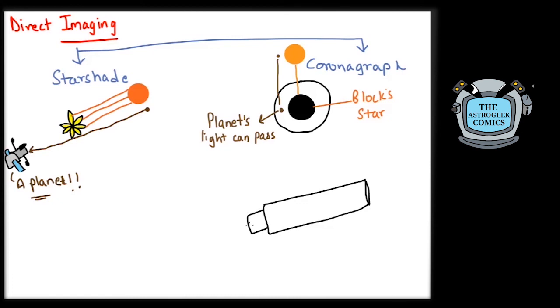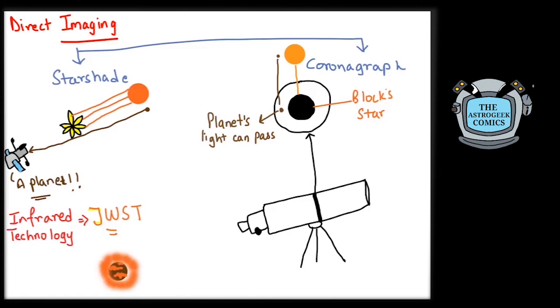Unlike a starshade, a coronagraph can be incorporated inside the telescope's body itself. More sensitive infrared observatories can make direct imaging a more practical method of observation. Direct imaging is also a way to directly study the atmosphere and the composition of planets by studying the light coming from them.